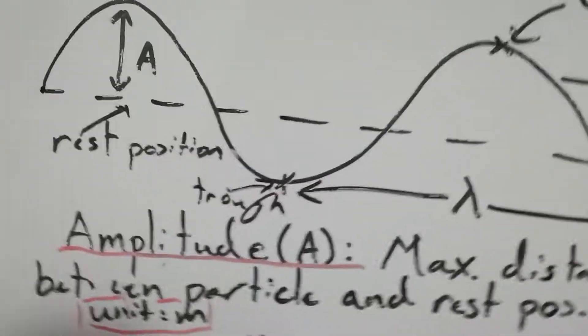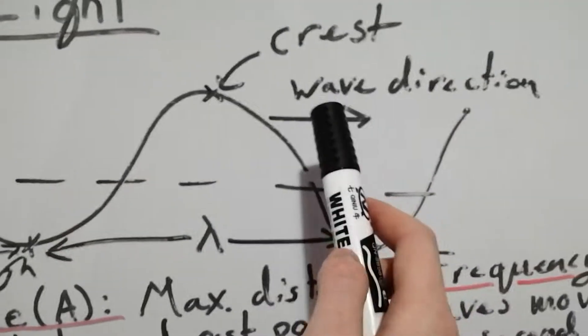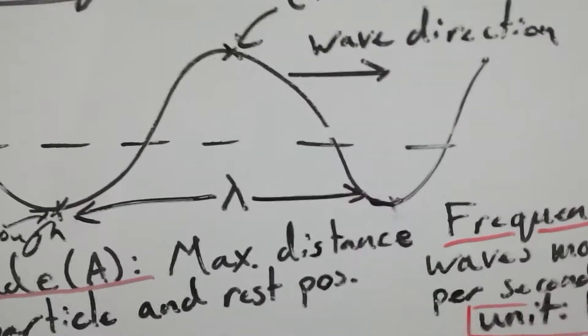Waves and light. Here we've got a diagram of a wave. This is one of the two ways you can make diagrams of waves. We have this line here which is the rest position. And then we've got crests here, troughs, and the wave direction. The wave is moving in this way and will continue to move that way.